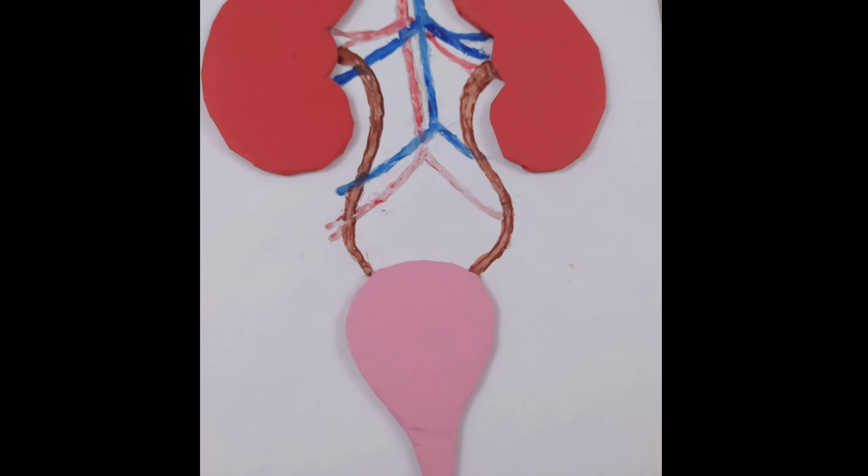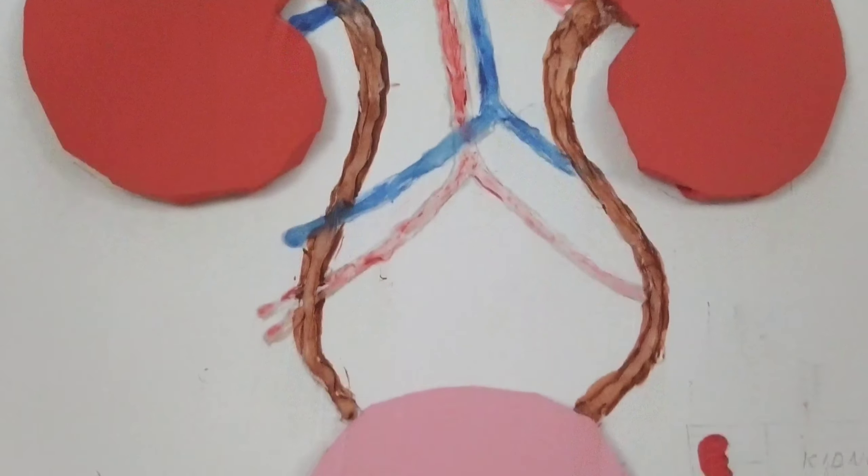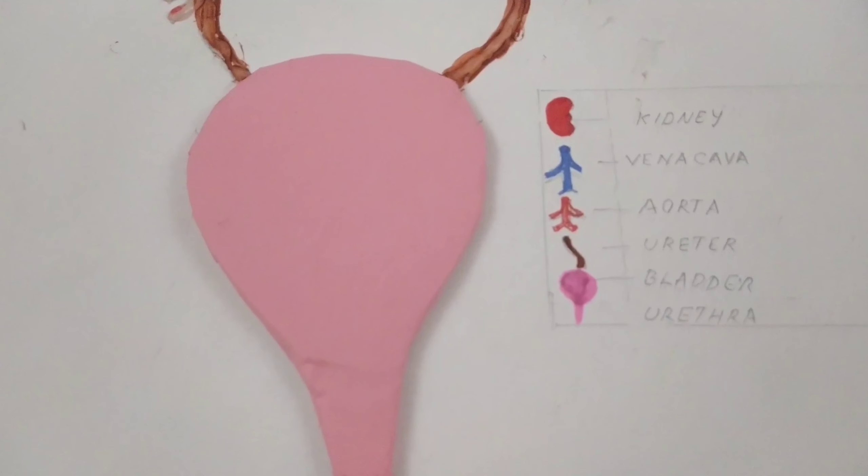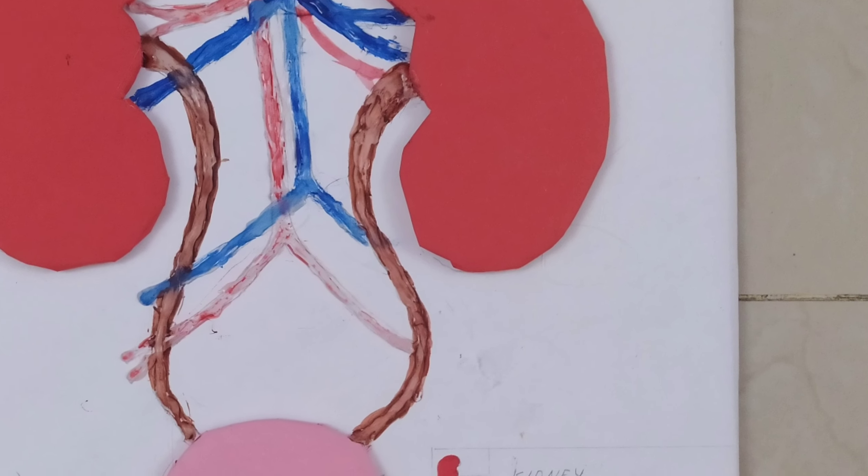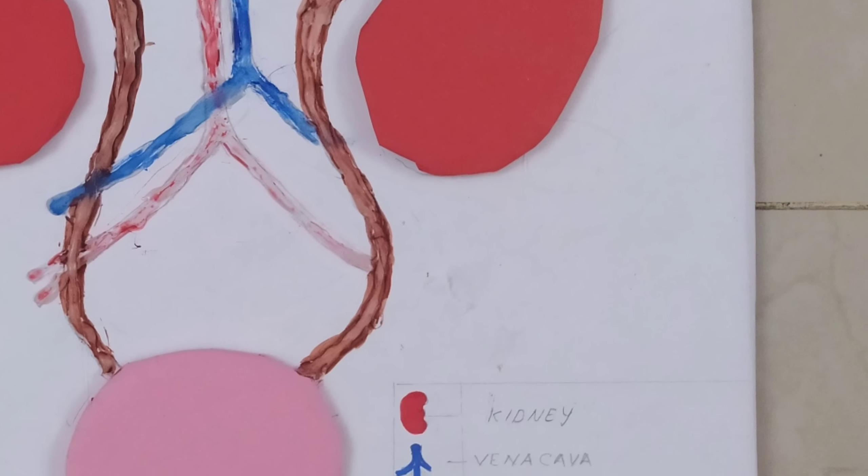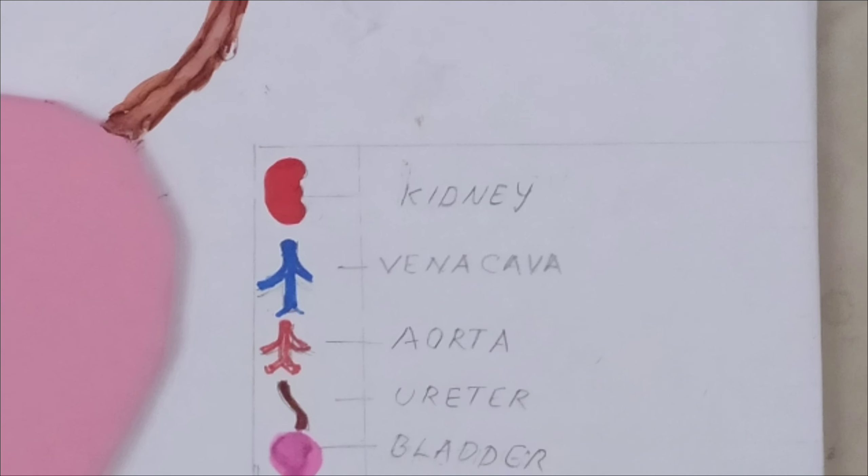Now let's label them. Here, I've given the main heading like excretory system model. If you want, you can also give like urinary system model. Now here for labeling it, right side down, I've drawn a small box and then I've drawn the picture of all the parts which I made and then I've wrote the name.